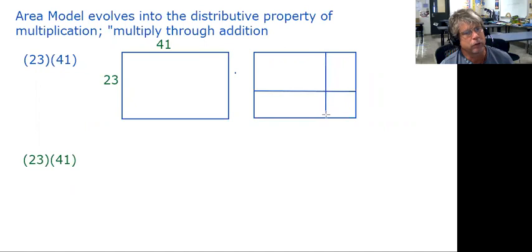So I don't like that 23 and I don't like that 41. What's friendlier to me is having 23 as 20 plus 3, and then 41 is 40 plus 1.